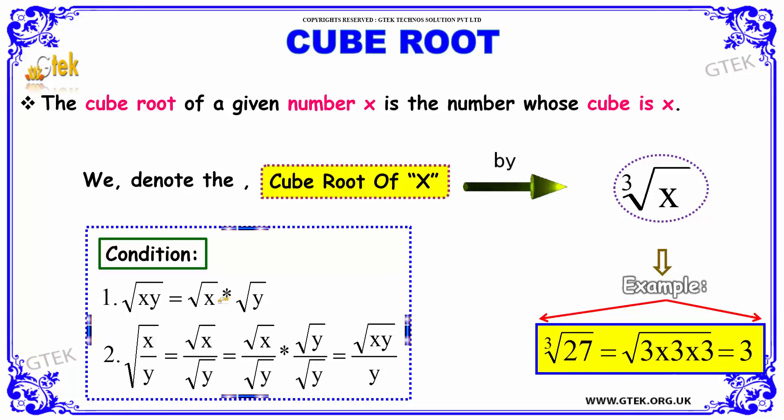The condition for cube root or a square root can be generalized as √(xy) can be written as √x multiplied by √y.